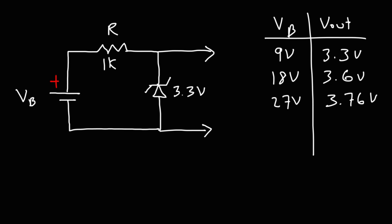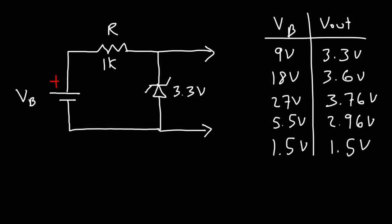It's not perfect — it's not an ideal device. Based on the amount of current that flows through it, the voltage will change slightly around 3.3. Decreasing the voltage to 5.5 caused the voltage to drop to 2.96 volts. And when I changed it to 1.5, the output voltage remained 1.5, at which point the zener diode wasn't even conducting any current.